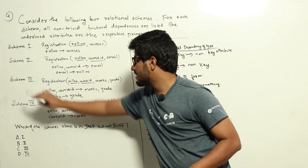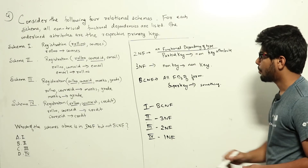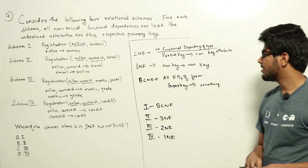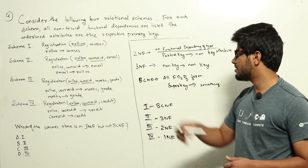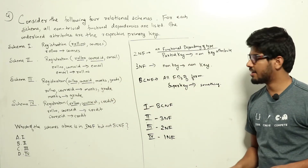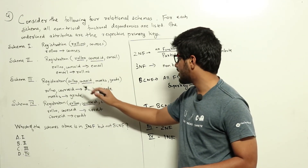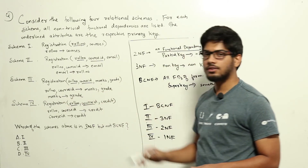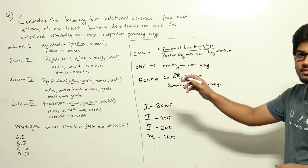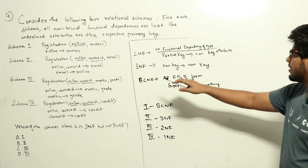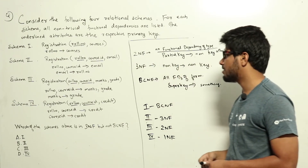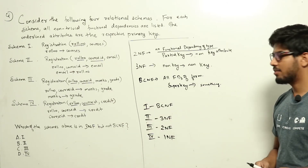Schema 3: the first dependency is roll number, course_id to marks and grade — super key to something, so this satisfies BCNF. The second is marks to grade. Marks is not a key attribute, and grade is also not a key attribute, so this is non-key to non-key. This violates 3NF. There is no partial key to non-key dependency, so it does not violate 2NF. Schema 3 is in 2NF but not 3NF.